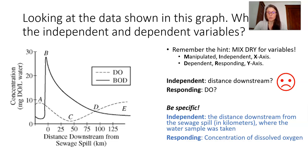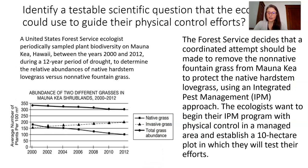Here's another one. In this scenario, what's a scientific question that ecologists could use to guide the physical control efforts in the experiment? I'll let you read it on your own. While you do, think about what the scientists can control in this setting and what outcomes can they measure.